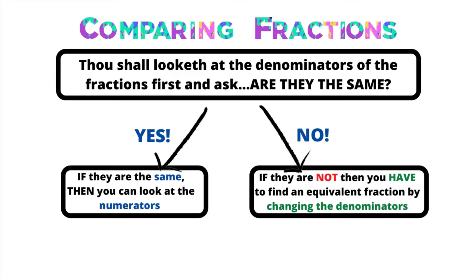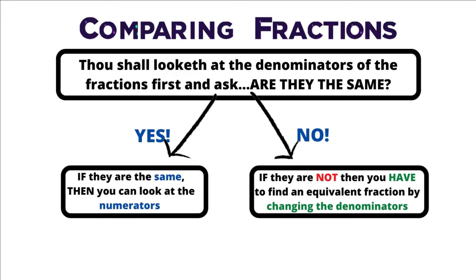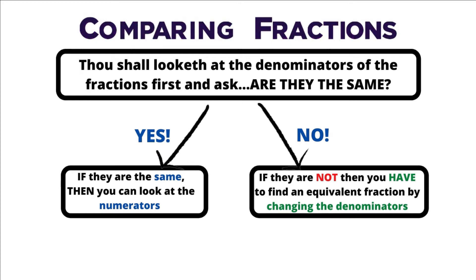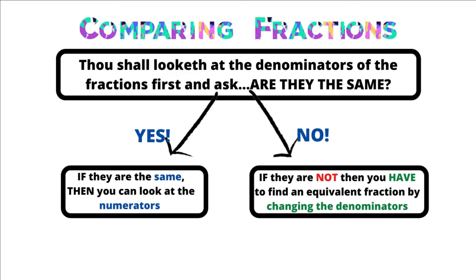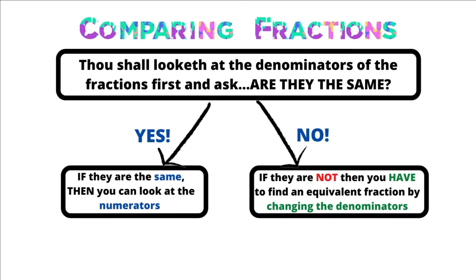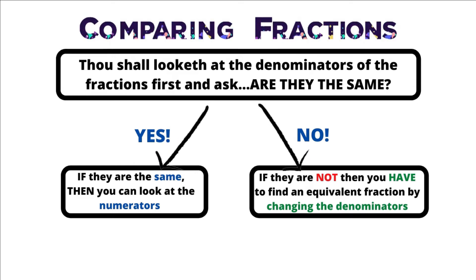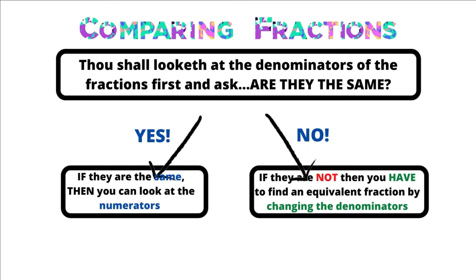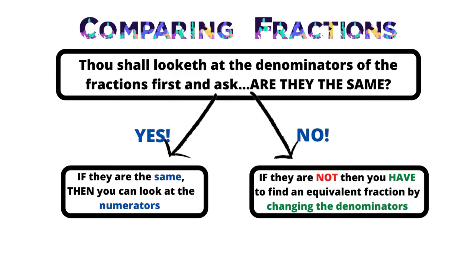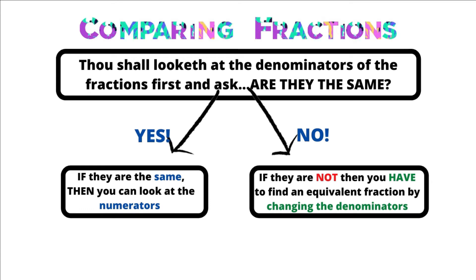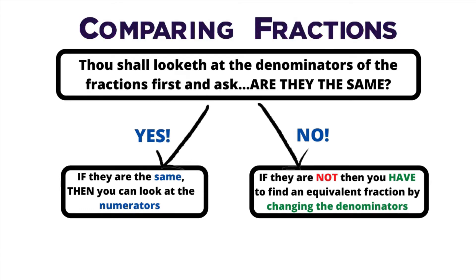Here's our flow map of greatness. If we're comparing fractions, we're going to ask ourselves: thou shall looketh at the denominators of the fractions first and ask, are they the same? So when you're comparing fractions, look at the denominator of each fraction and say, hey, are these the same? If they are, then you can look at the numerators — follow the arrow that says yes.